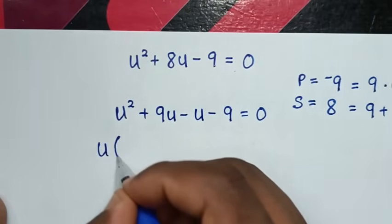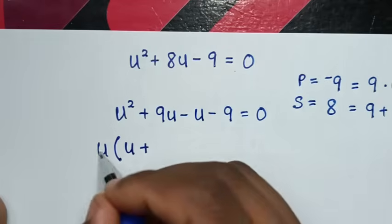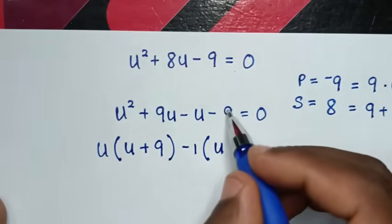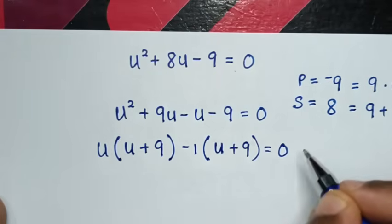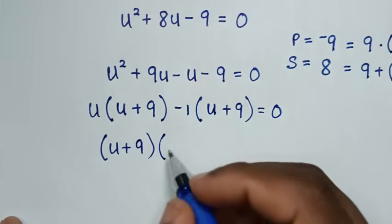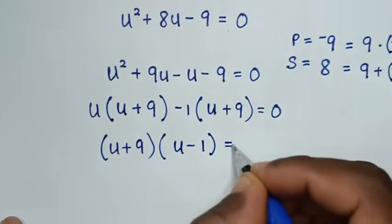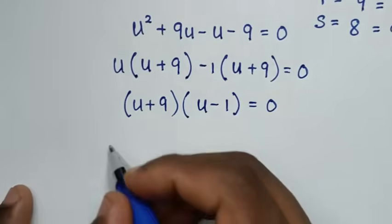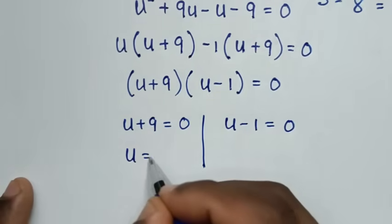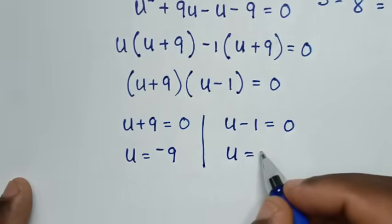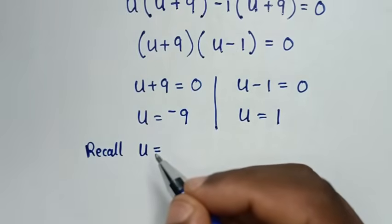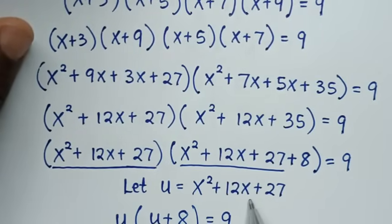Factoring u²+8u−9 = 0 as (u+9)(u−1) = 0, we get two solutions: u+9 = 0 giving u = −9, and u−1 = 0 giving u = 1.